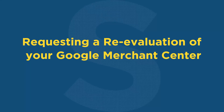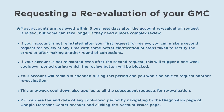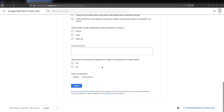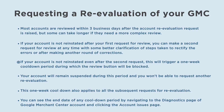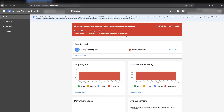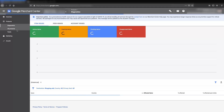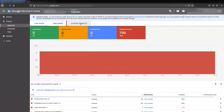Regarding requesting a re-evaluation of your Google Merchant Center: most accounts are reviewed within three business days after a re-evaluation request is raised, but some can take longer. If your account is not reinstated after the first request, you can make a second request at any time with better clarification of steps taken to rectify the errors. If your account is not reinstated after the second request, this triggers a one week cooldown period during which the review button is blocked and you cannot request another re-evaluation. This one week cooldown also applies to all subsequent requests. You can see the end date of any cooldown period on the Diagnostics page under Account Issues.